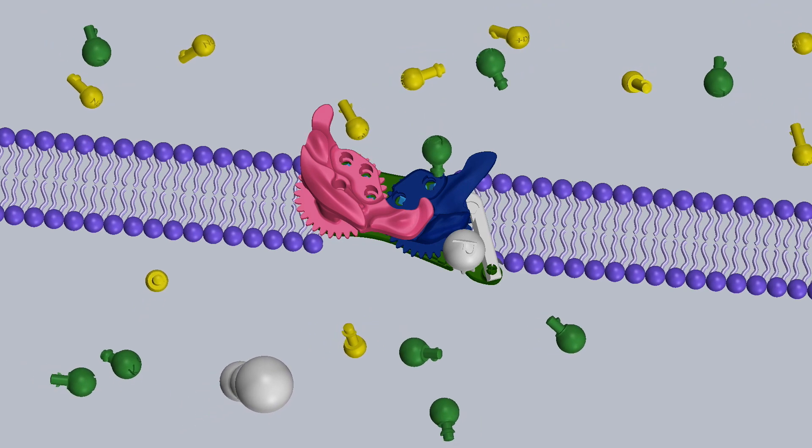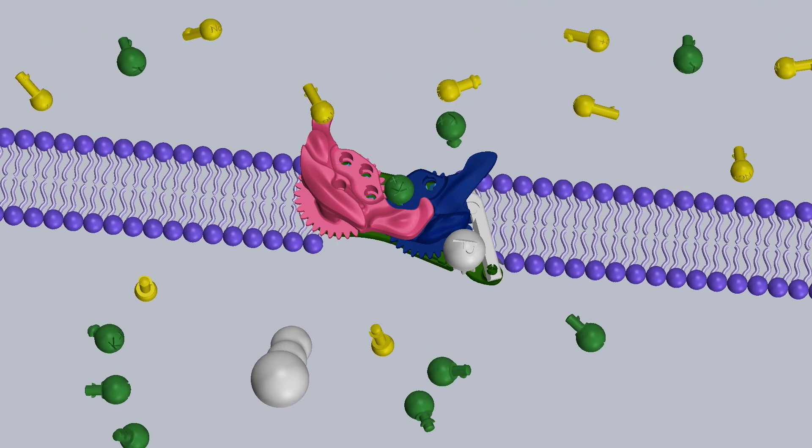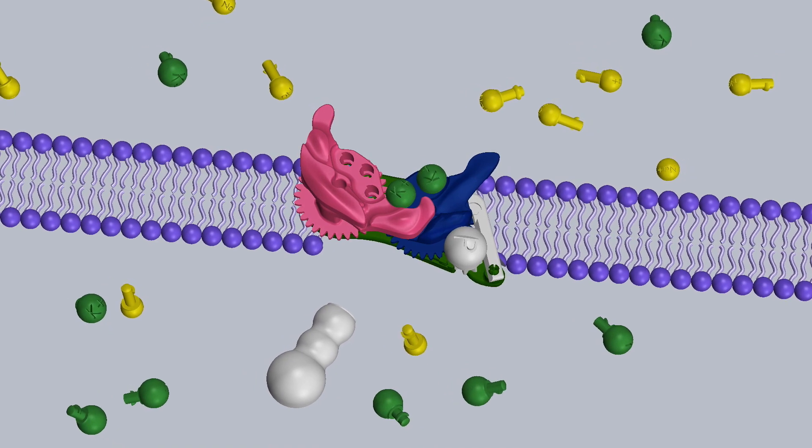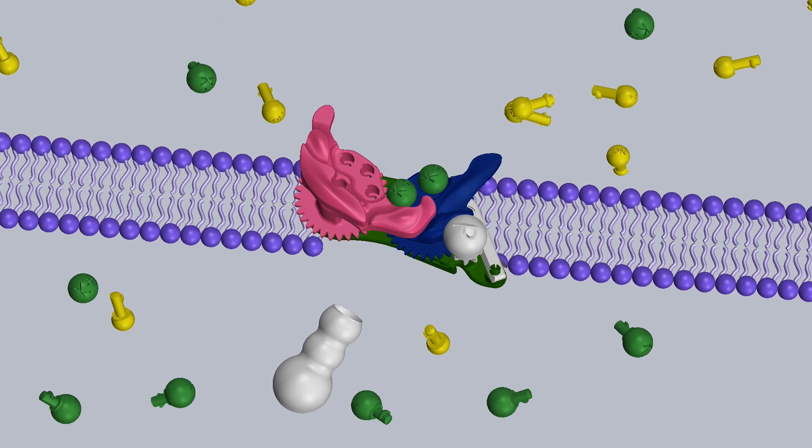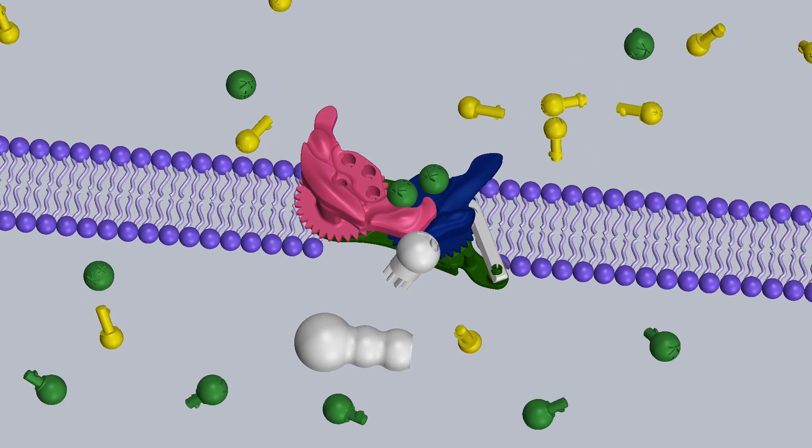Two potassium ions then bind to the activated protein. Since the protein channel needs to return to its resting position, no energy is needed, so the phosphate is released.